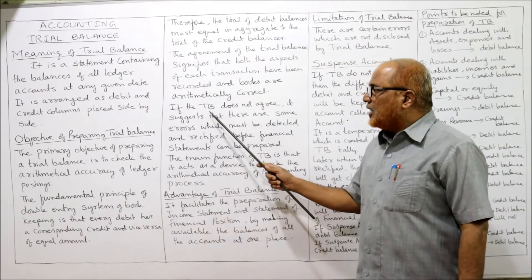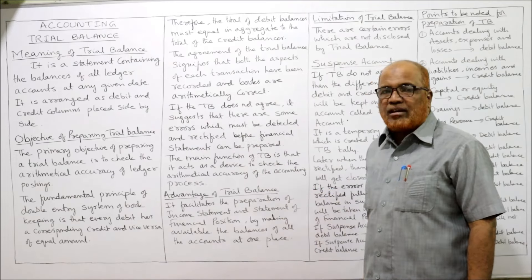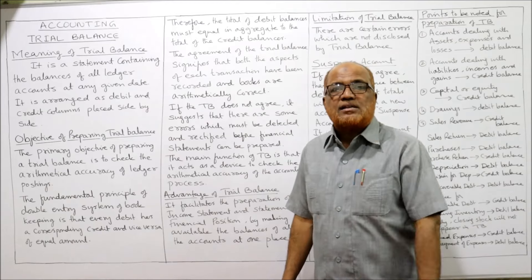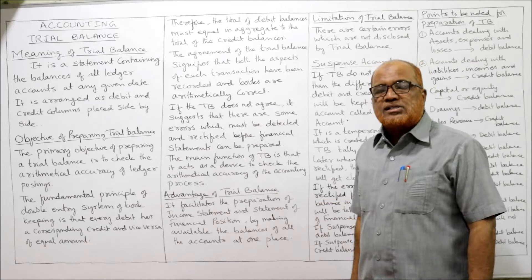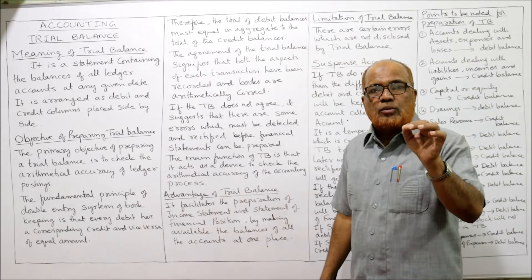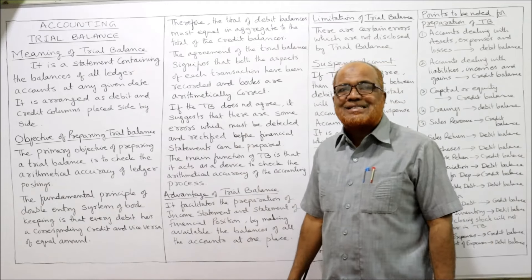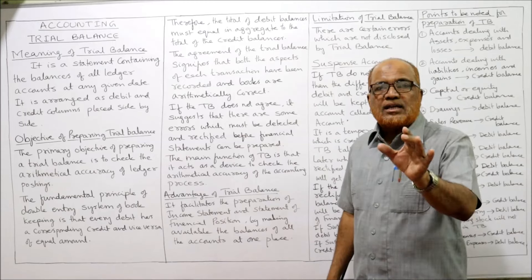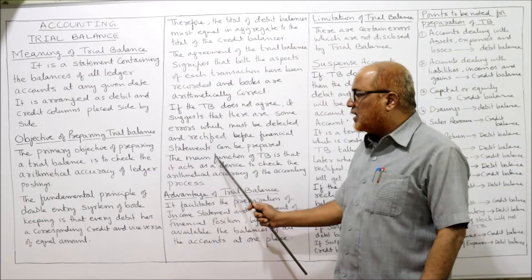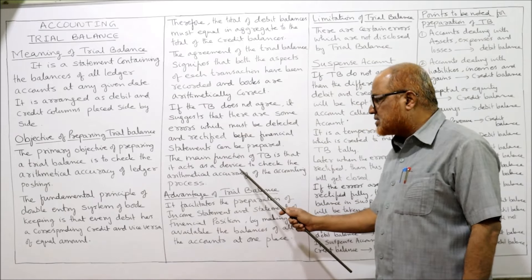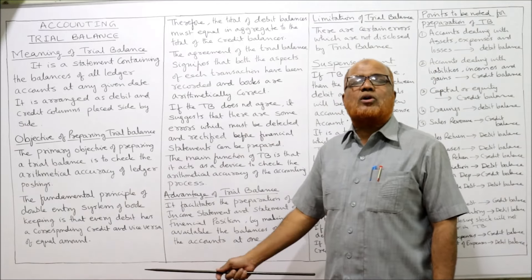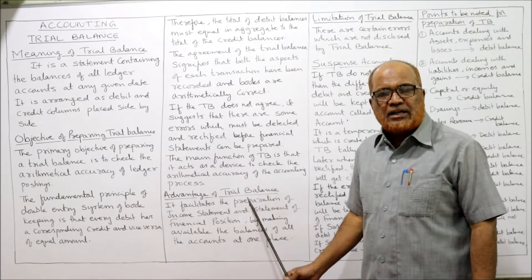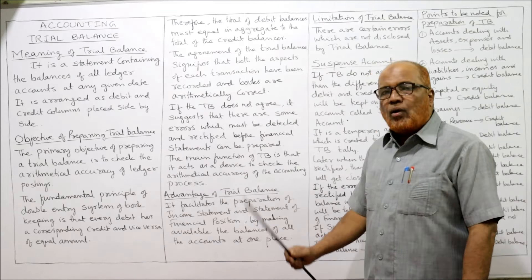Arithmetically the transactions are correct if the trial balance agrees. If the trial balance does not agree — if the total of debit and total of credit are not equal — it suggests there are some errors in the ledger postings. Those errors must be detected and rectified before preparing the financial statements. The main function of the trial balance is that it acts as a device to check the arithmetical accuracy of the accounting process.